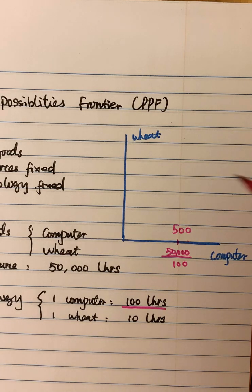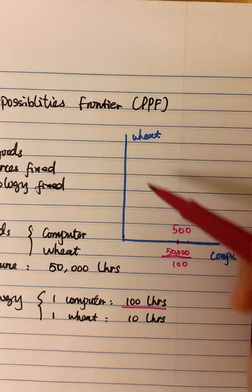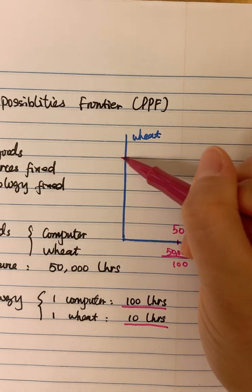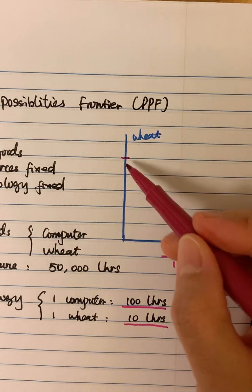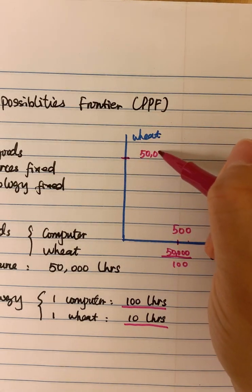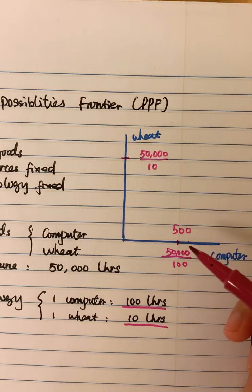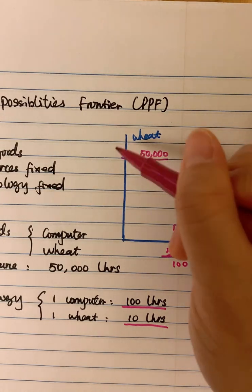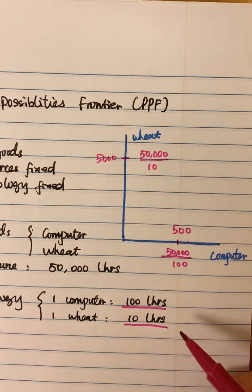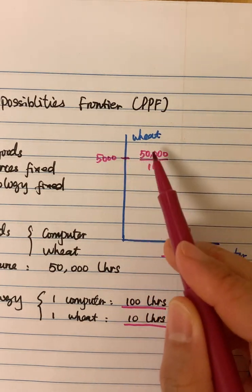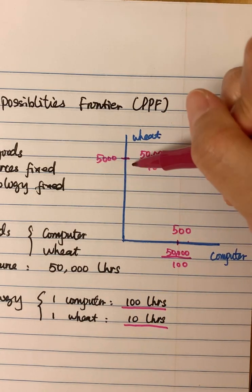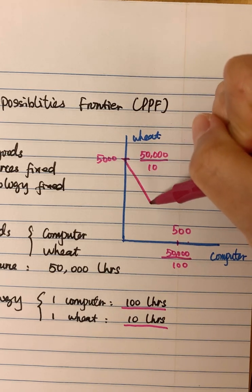And for the wheat, you can also notice one ton of wheat needs 10 labor hours. So we can also find out the maximum amount of wheat that this economy can produce. If we just use all the labor hours to produce wheat, we can have 5,000 tons of wheat available. Then link these two dots here, we can have our PPF.